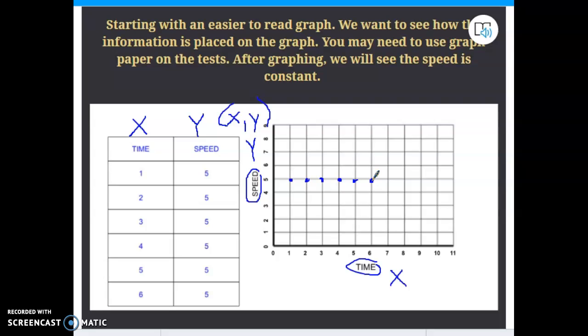Four seconds, the speed is 5. Five seconds, the speed is 5. And six seconds, the speed is 5. I'm thinking, hurry up, Mr. Bullens. But we can't hurry up through that, because if we do, we're going to miss something that's very important. I'm going to use a little handy-dandy line drawer here.